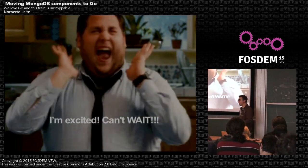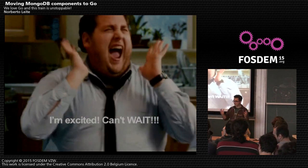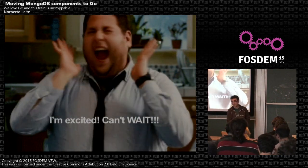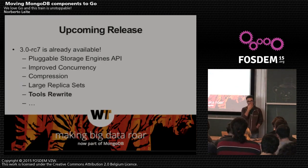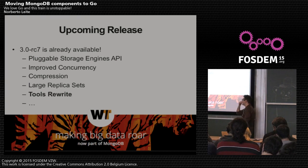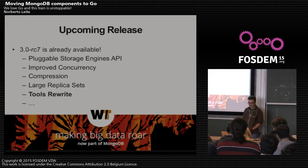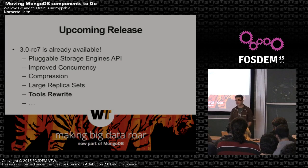MongoDB 3.0 Release Candidate 7 is already out. It has a lot of new features like a pluggable storage engine, improved concurrency, compression, large replica sets, and obviously our tools rewrites. It's also coming with WiredTiger, which is making big data roar.